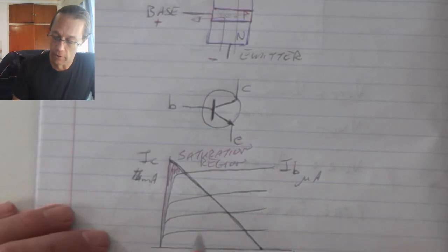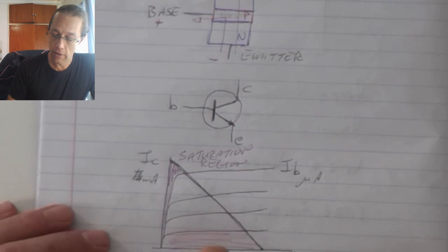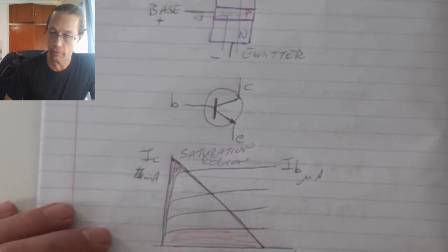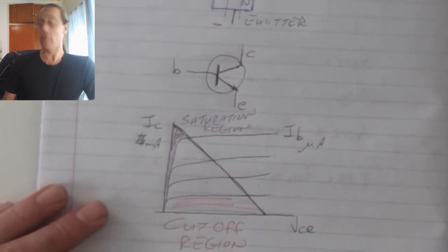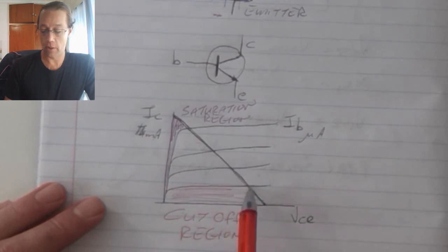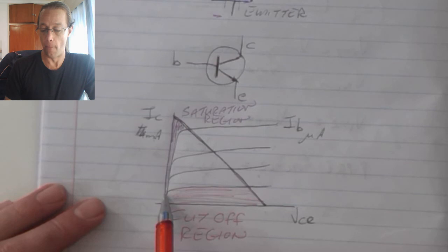My second area of operation is this one at the bottom over here, and that is my cutoff region. The cutoff region is when the transistor is technically off. In other words, we can see that when we're in this area, I've got a very high voltage but a very small current flowing through it.